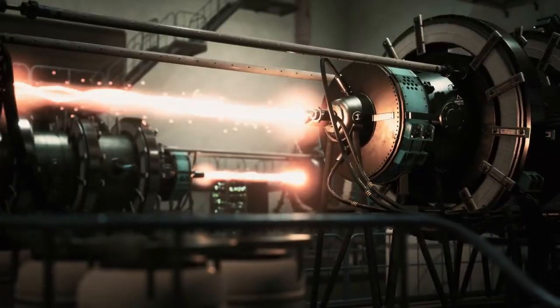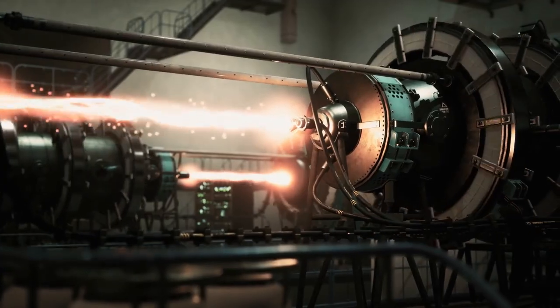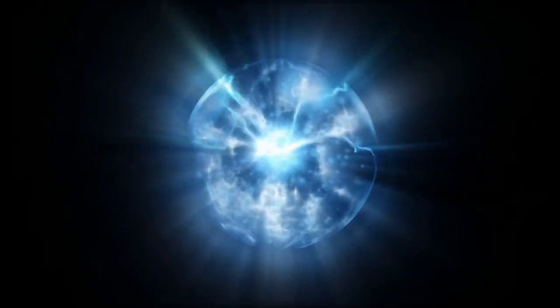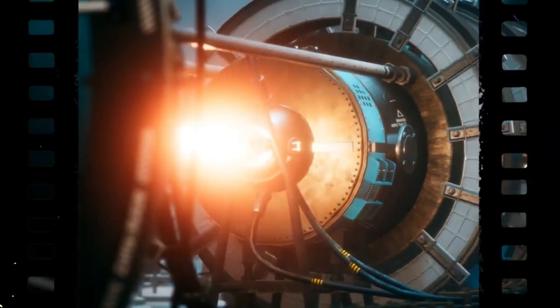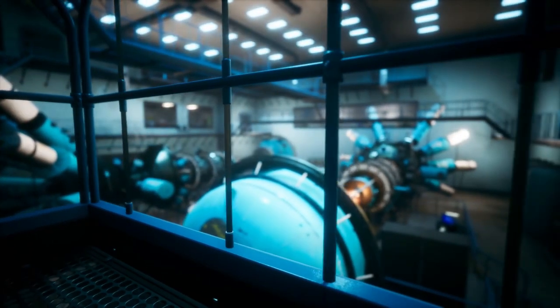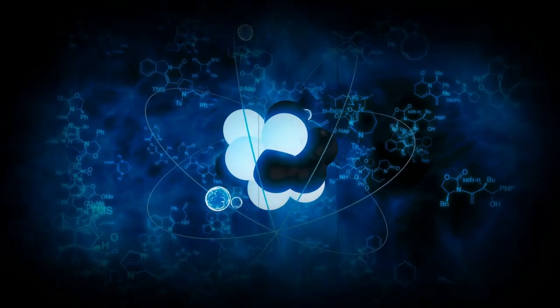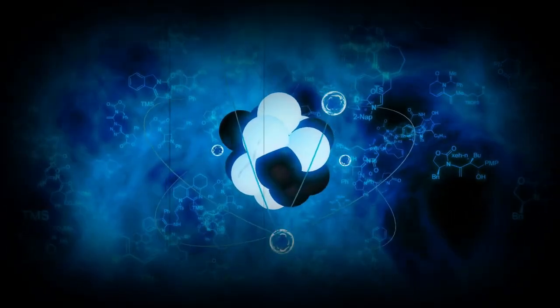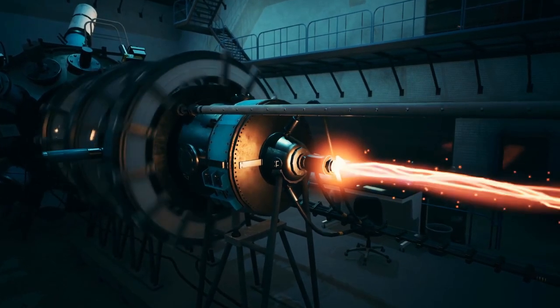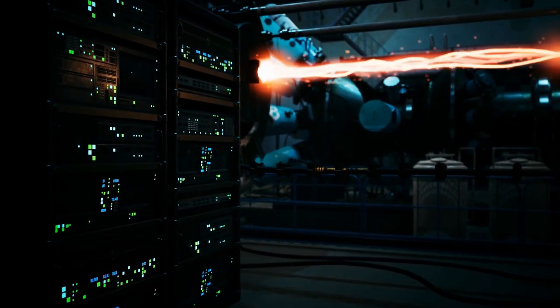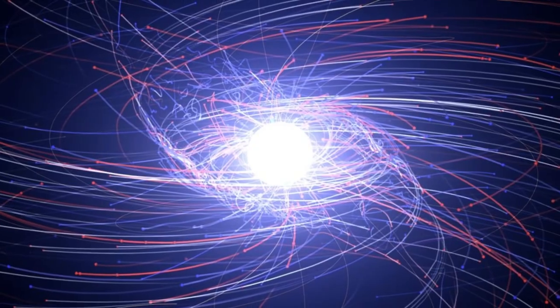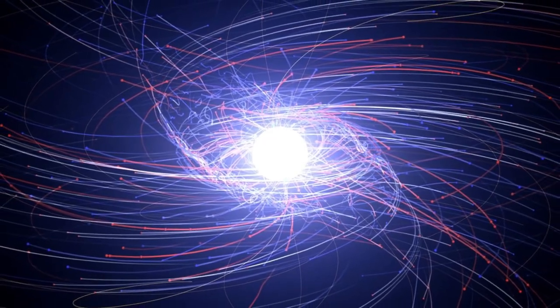This staggering figure is due to the enormous energy input, advanced technology, and infrastructure required to create and contain antimatter. Antimatter is incredibly scarce in our universe. However, it is naturally produced in certain high-energy processes, such as cosmic ray interactions and certain types of radioactive decay. These natural sources, while fascinating, produce antimatter in quantities far too small for practical use. The primary method of producing antimatter on Earth involves particle accelerators, such as those found at CERN.